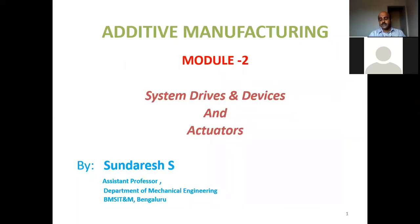We are supposed to discuss only a few concepts: motors — hydraulic type, pneumatic type (air motors), and electrical type (both AC and DC motors). In the second part, we need to cover actuators — solenoids, electrical type actuators, mechanical type actuators, and shape-memory alloys. We will first complete the system drives and devices part, then move on to actuators.